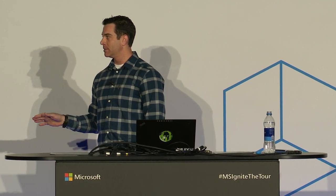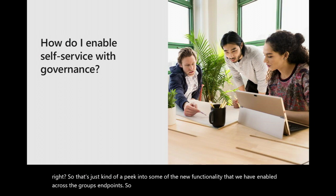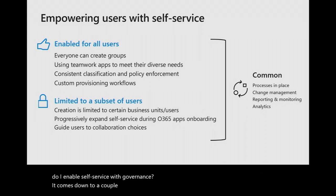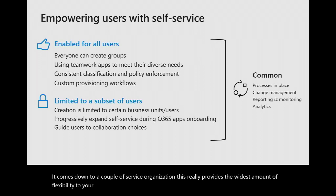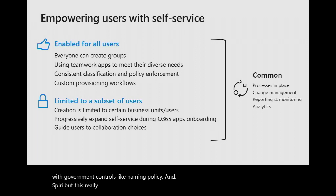To recap the demos: we saw an updated experience in Yammer where files are stored directly in SharePoint covered by compliance needs, an updated files experience in Outlook, updated group cards, a completely reskinned UI, and the new Groups Hub. Now let's talk about management. How do you enable self-service with governance? We've seen two models: one where you enable self-service for all users in your organization — providing maximum flexibility with governance controls like naming policy and expiry — and one where you enable it for a limited subset of users.